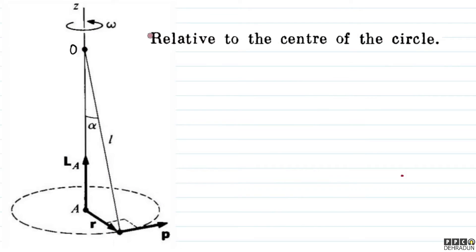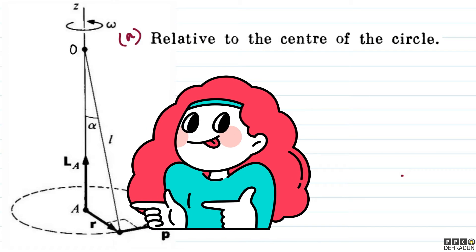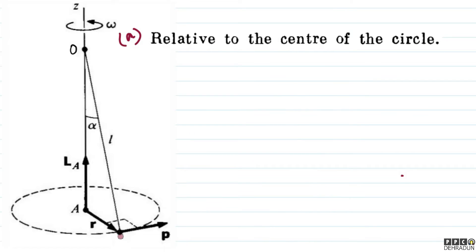We can also justify this. On the ball, two forces act: gravity mg downward, and tension T along the thread at angle alpha. Let me draw the diagram separately to analyze the torques about point A, the center of the circle.